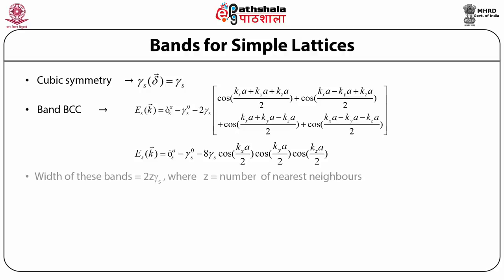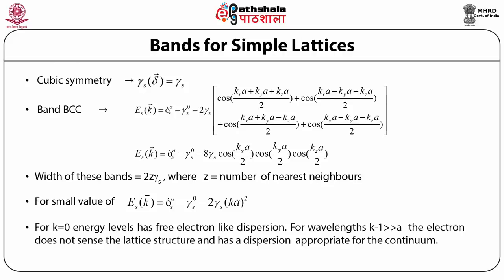Since γ_s is basically determined by the ratio of the wave function decay length and the lattice constant, it increases with quantum number n and decreases with the lattice constant. For small k, all these expressions yield E_s = ε_s − γ_s(0) − zγ_s + γ_s(ka)², showing free-electron-like dispersion near k ≈ 0. This can be rationalized: for wavelengths k⁻¹ much greater than a, the electron does not sense the lattice structure and has a dispersion appropriate for the continuum.